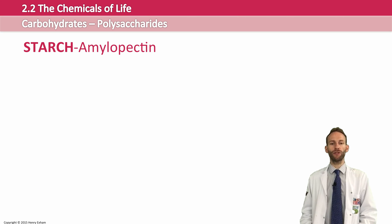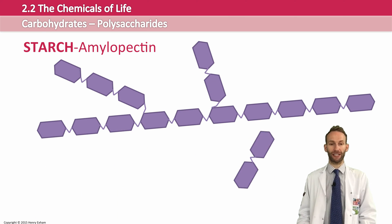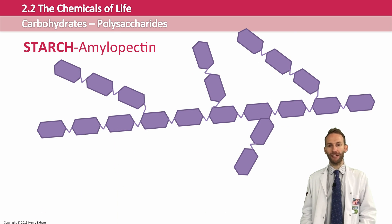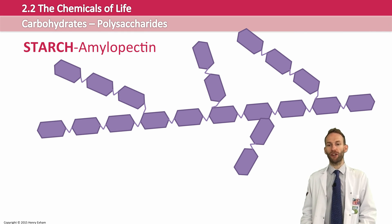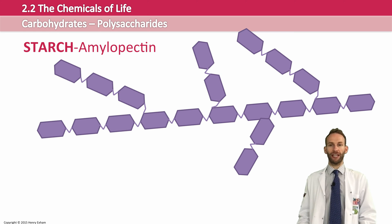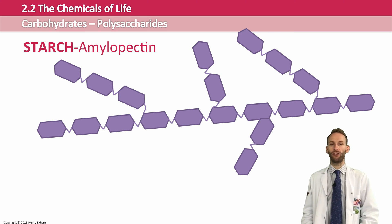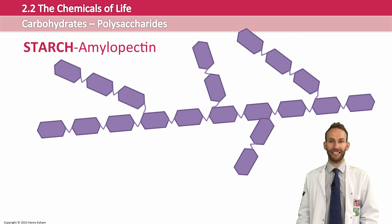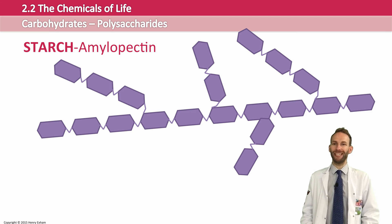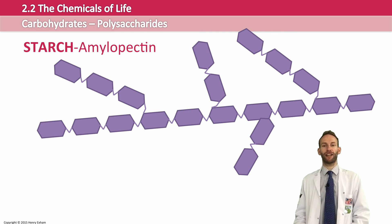Amylopectin is also made up of alpha glucoses, but these are branched because it has not only 1,4 glycosidic bonds but also some 1,6 glycosidic bonds, which causes branches to come off. The branching changes the properties of the molecule — the side chains can be easily broken off when energy is required. This means starch is a great storage molecule because it has long-term storage capacity in the amylose, but also a quick-release energy store in the amylopectin, since those side chains can be broken off quite easily.